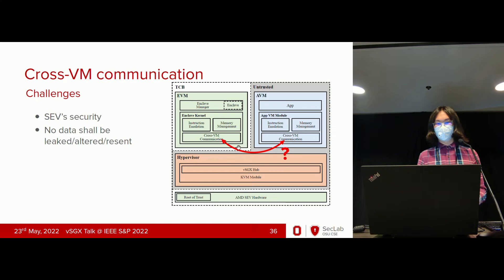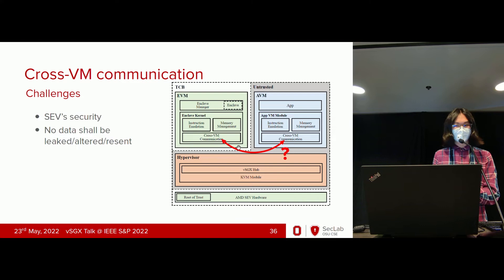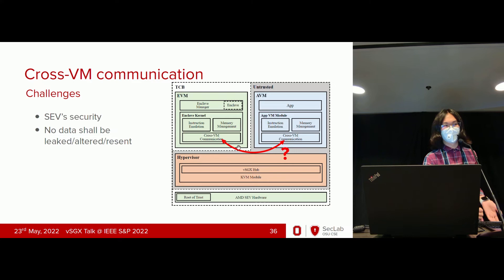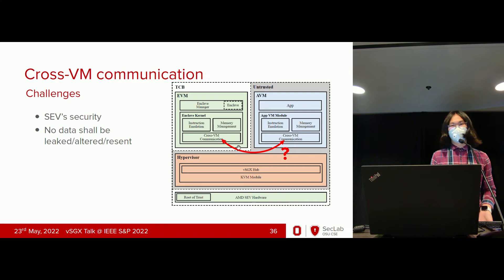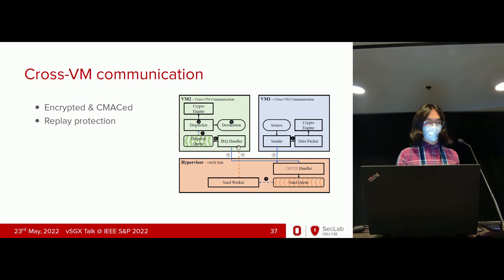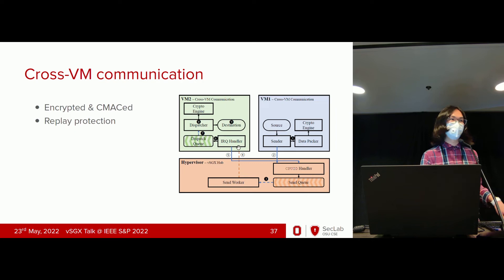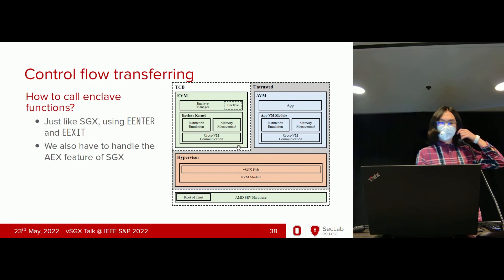To connect the two VMs, we implement cross-VM communication. The challenge is the AVM is SEV-protected, so we can't just rely on the hypervisor. TCP would work but is too slow, so for performance we implemented our own mechanism based on shared memory. We don't want the AVM to share anything with the hypervisor as that would breach SEV security, so we encrypted the whole memory channel and C-bit marked it — meaning the hypervisor can't alter anything without causing a fault. We also use a unique session number to prevent replay attacks.